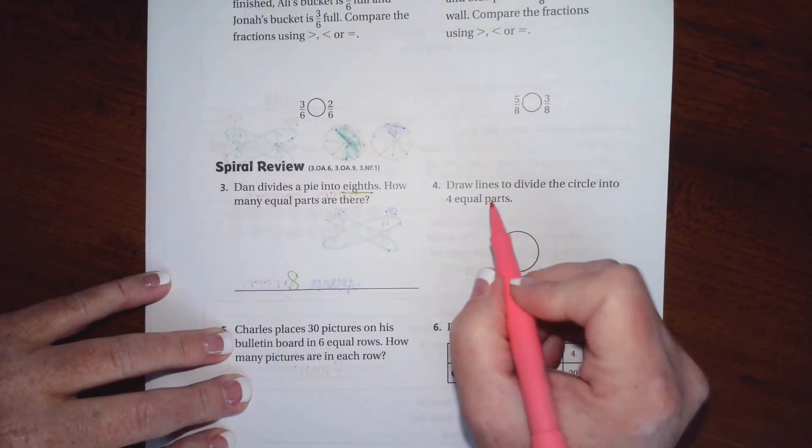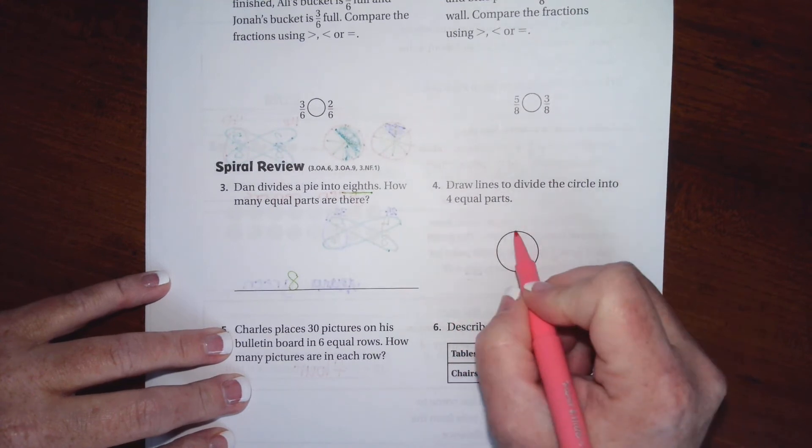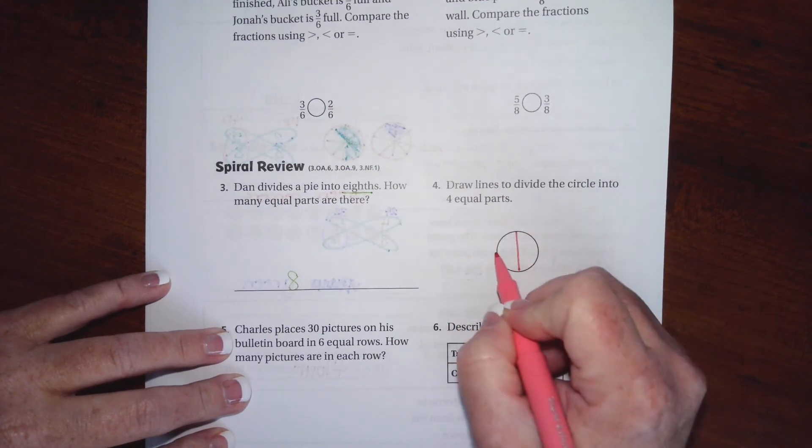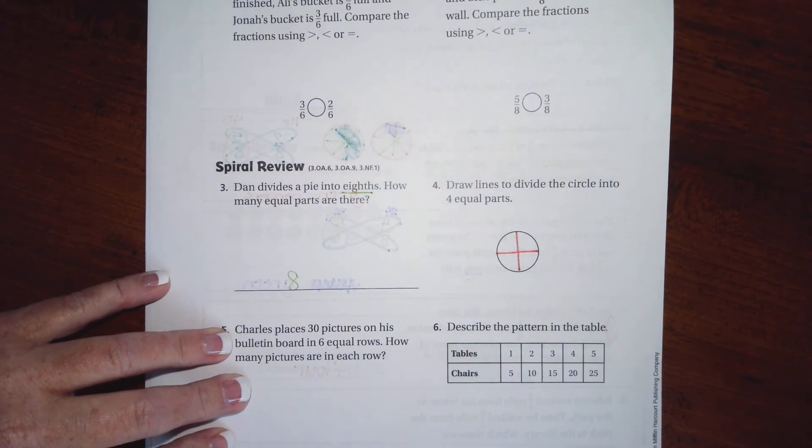Draw lines to divide the circle into 4 equal parts. There's 2. There's 4.